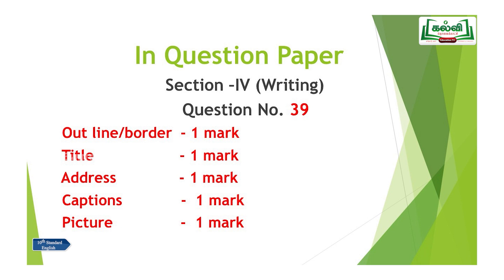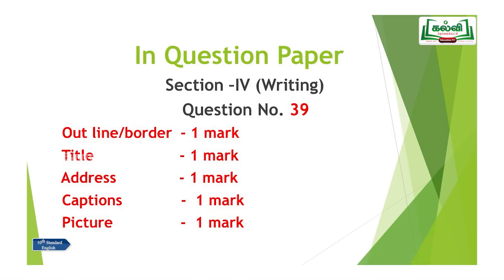The last rubric is the picture. If you know how to draw, make a simple picture related to the question - that carries one mark. So five marks are allocated as: outline or border - one mark; title - one mark; address - one mark; captions - one mark; drawing or picture - one mark. Totally you will get five marks. You don't need to add anything of your own - all the hints will be given in the question, so the full five marks you can get easily.